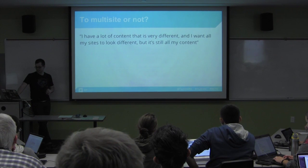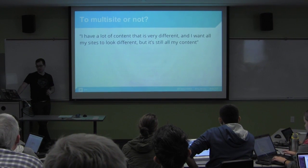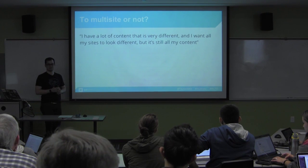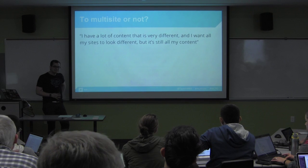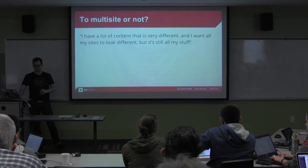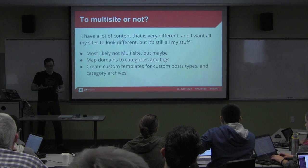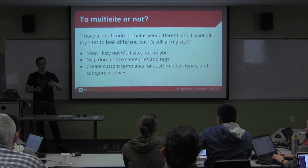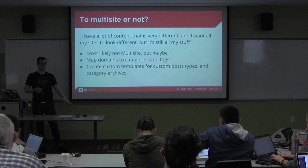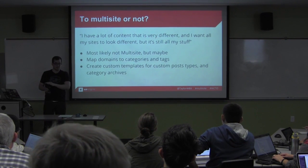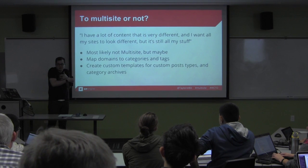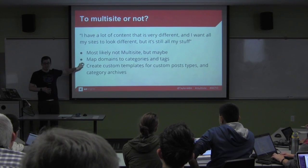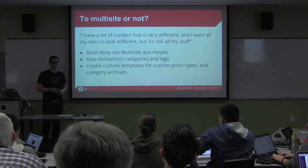Use case 4: 'I have a lot of content — kind of different content — but I want all my sites to look different and it's still all my content.' Most likely not Multisite. Map domains to categories and tags, keep all your content in a single WordPress install and serve it via different domains. Create custom templates for your different categories, use custom post types. So many ways to do this without a Multisite network and all that complexity — WordPress non-Multisite does this really well.